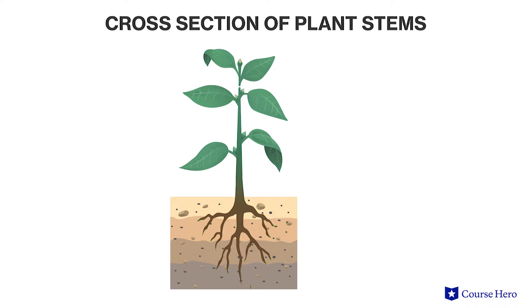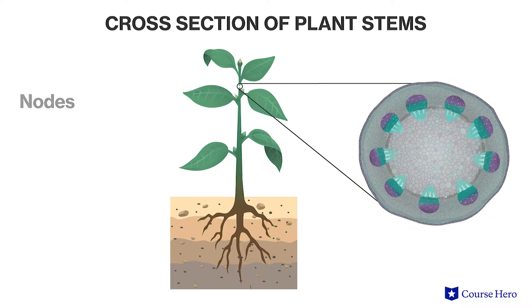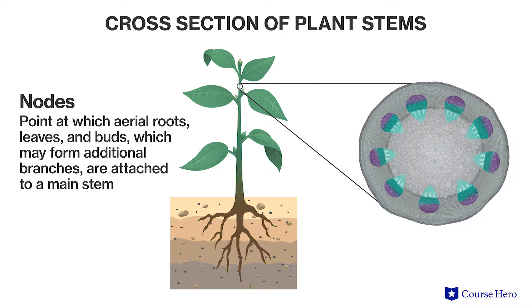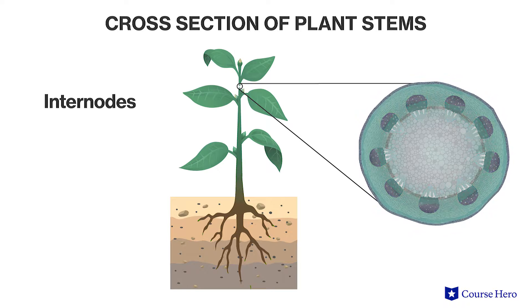Let's take a closer look at a stem. A stem is an organ consisting of an alternating system of nodes — the points where leaves are attached — and internodes, the stem segments between the nodes.